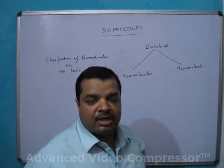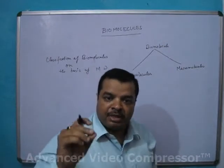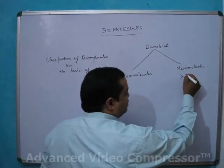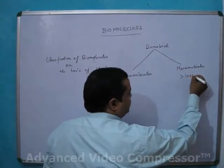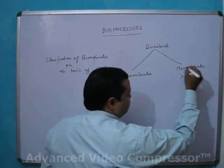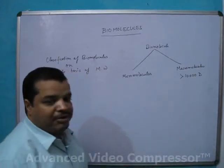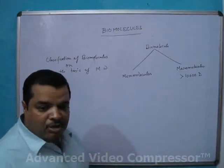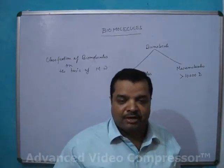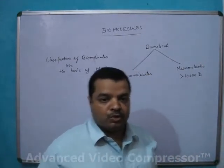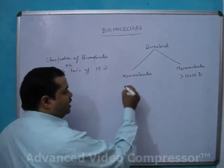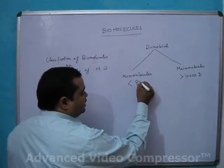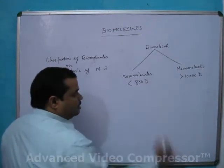The second classification is based on molecular weight. Macromolecules means the molecular weight is greater than 10,000 Dalton, and according to the book, the molecular weight of micromolecules is less than 800 Dalton.